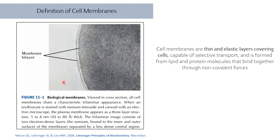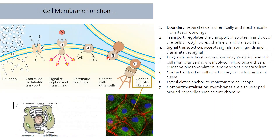So what is a cell membrane? As you can see in this microscopic picture, a cell is encased in two layers that we know as a cell membrane. Basically it's defined as thin and elastic layers which cover a cell, and it has many different functions which we'll look at now.